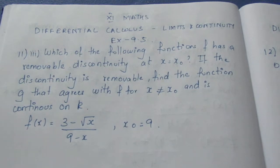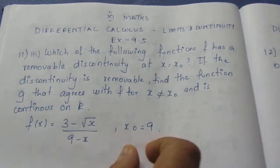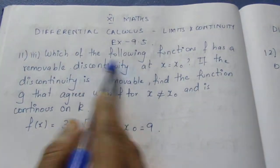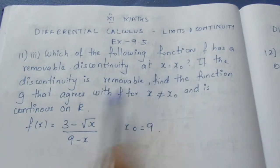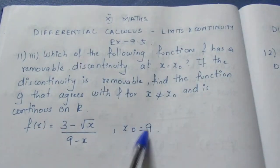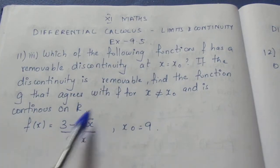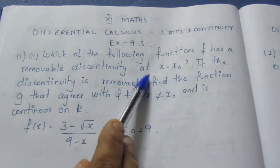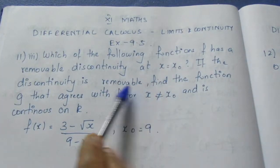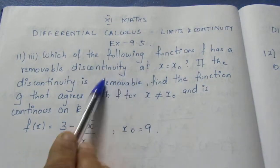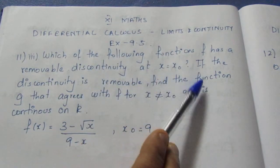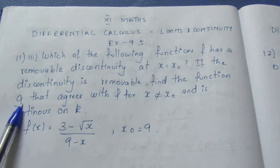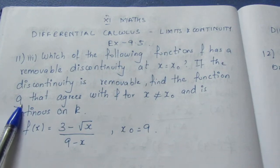If we look at this function, we substitute x naught to check for discontinuity. When x is equal to x naught, if discontinuity exists, then if the discontinuity is removable, we find the function g.